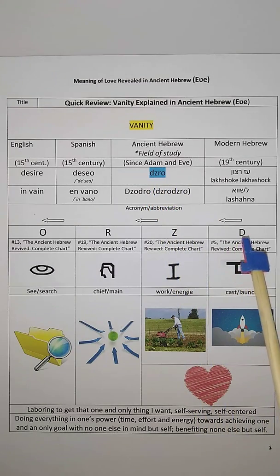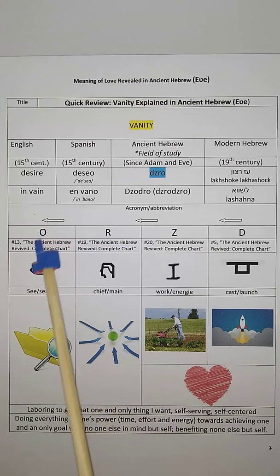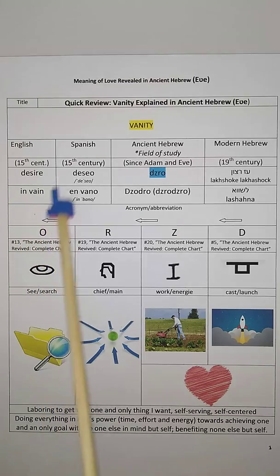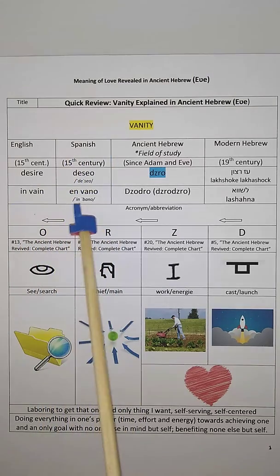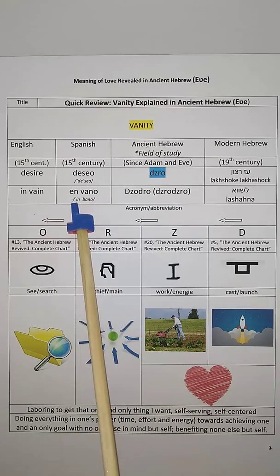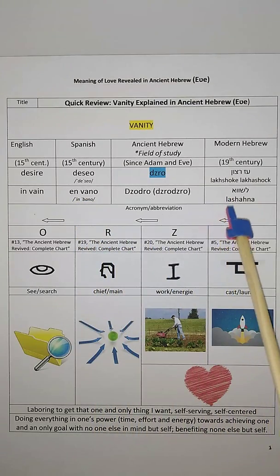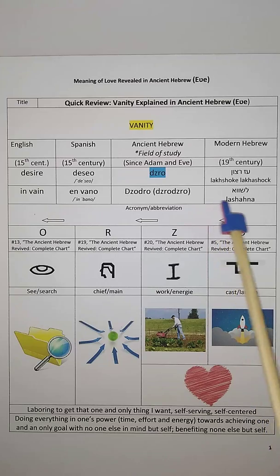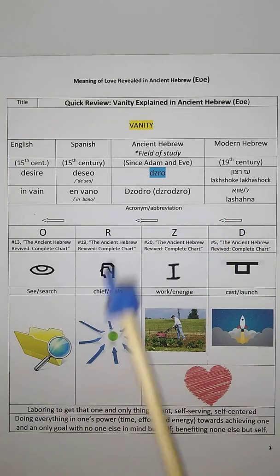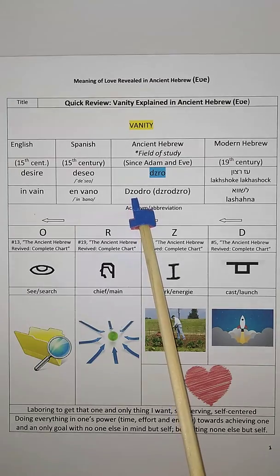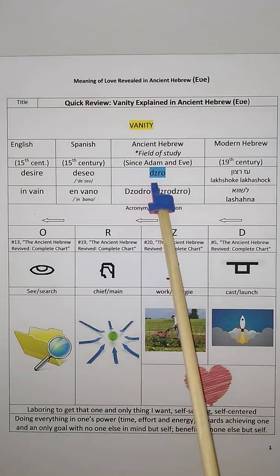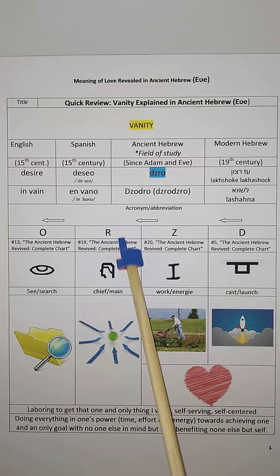The root consonants are the D, Z, R, and the O — Jro. And likewise, 'in vain' in Spanish is 'en vano.' And 'in vain' in modern Hebrew is 'lachashana.' And Jrojro is how you say vanity in the ancient Hebrew, which is the Ebe. And the root consonants are the D, Z, R, and the O.